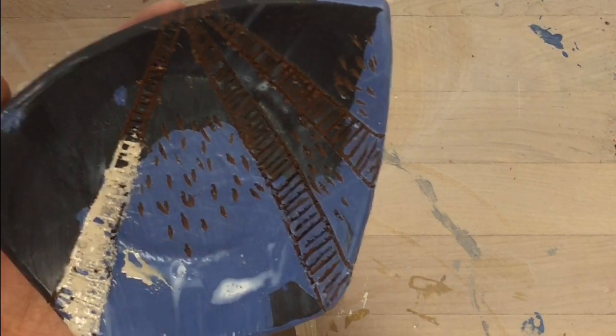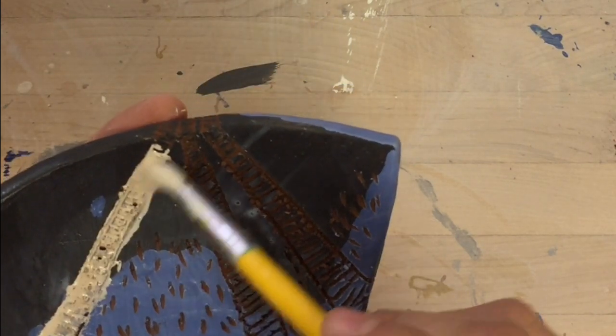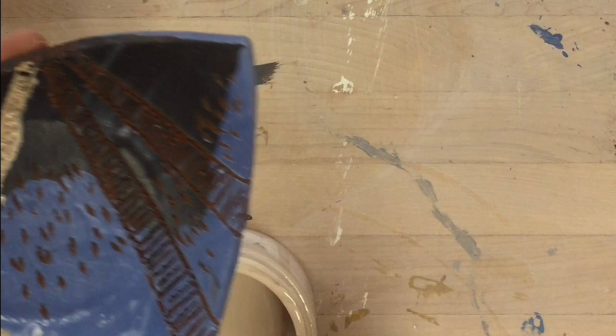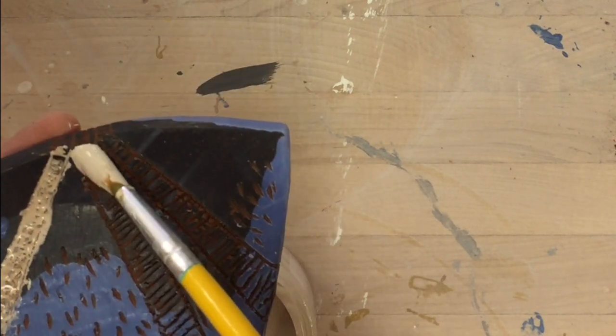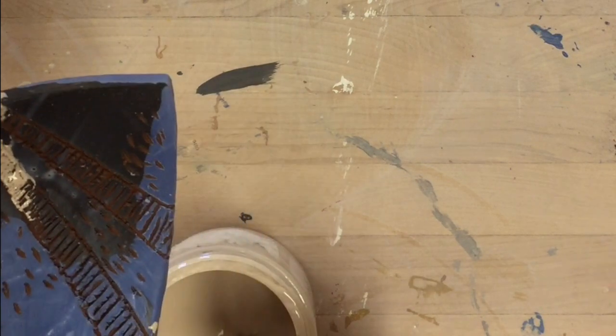And you can see as I'm painting over the wax area it's kind of beading up, and that's because my decorating slip or my underglaze or my glaze or whatever is water-based, but the wax is not. I want to dab it on so that I make sure I really get it into those carved areas.